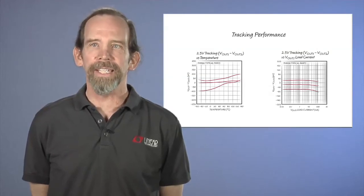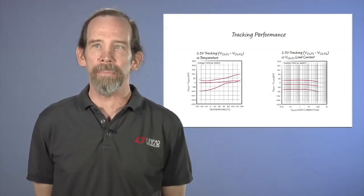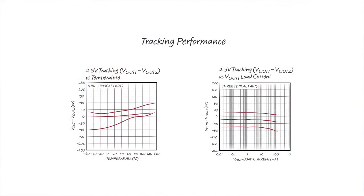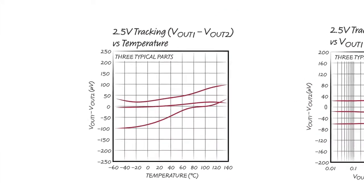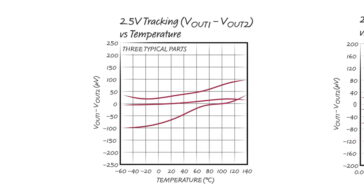To get an idea of how well the LT6658 outputs track, let's look at these plots. The first plot consists of three typical parts. The temperature is swept and the difference between the two outputs is plotted. The outputs are within plus or minus 100 microvolts and vary only slightly.